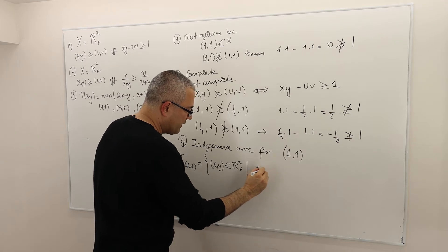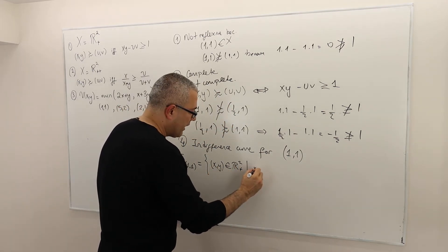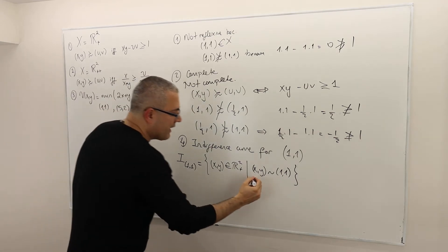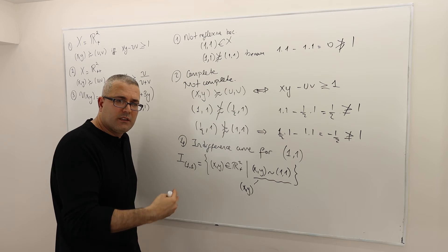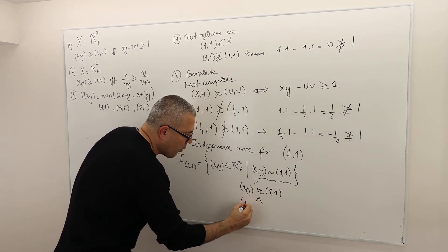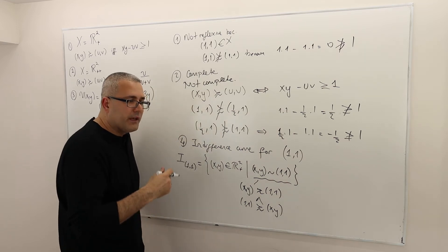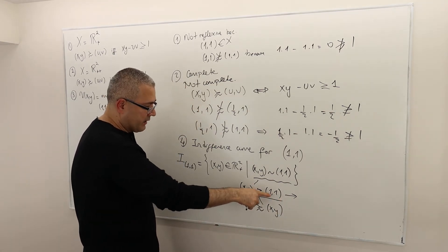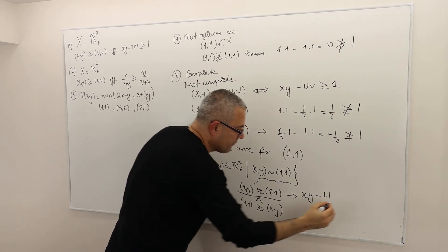Now I continue with logical deduction. What does it mean that (x, y) is indifferent to (1, 1)? It means (x, y) is at least as good as (1, 1) AND (1, 1) is at least as good as (x, y). What does the first statement mean? According to the definition, it means x times y minus 1 times 1 is greater than or equal to 1.